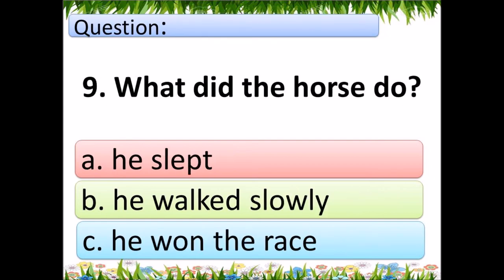Nine. What did the horse do? A. he slept, B. he walked slowly, C. he won the race.